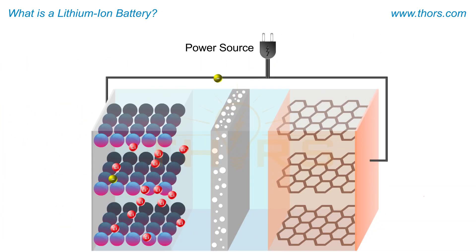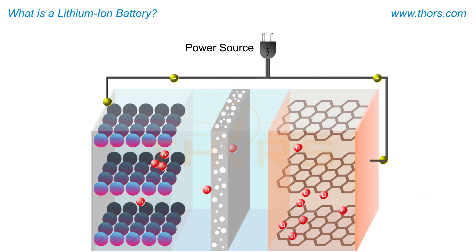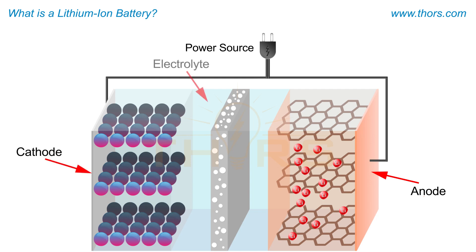Lithium is the key component in lithium-ion batteries and the movement of lithium ions is the driving force for the operation of the lithium-ion batteries. The four main components of a lithium-ion battery are anode, cathode, electrolyte, and separator.